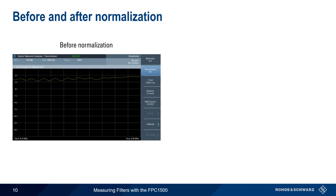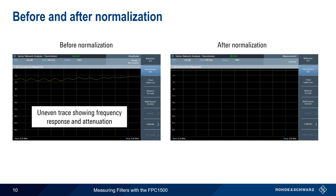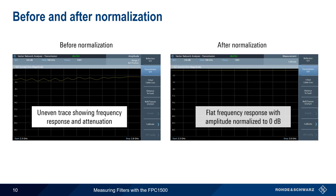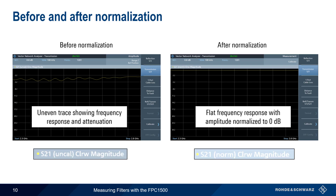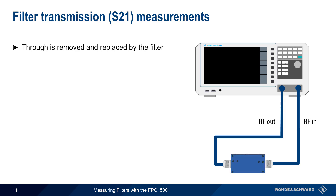Here is a typical display before normalization. Although the tracking generator output is constant, the frequency response and attenuation of the cables will create an uneven or wavy trace. After normalization has been run, the line should be flat and the level of this line should be normalized to 0 dB. All filter transmission measurements will now be relative to this level. Note that the calibration status is shown on the upper left portion of the screen — 'Uncal' means uncalibrated and 'Norm' indicates that normalization has been performed for the configured frequency range. After normalization, the through is removed and replaced by the filter under test.